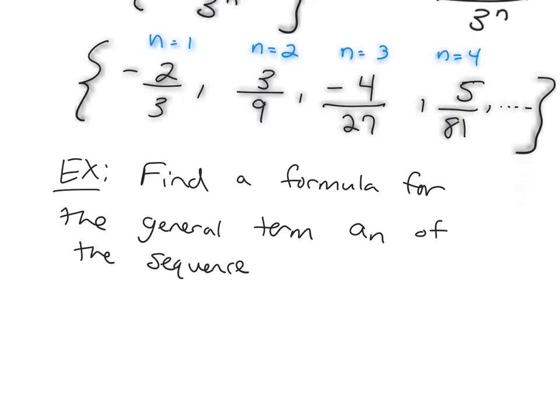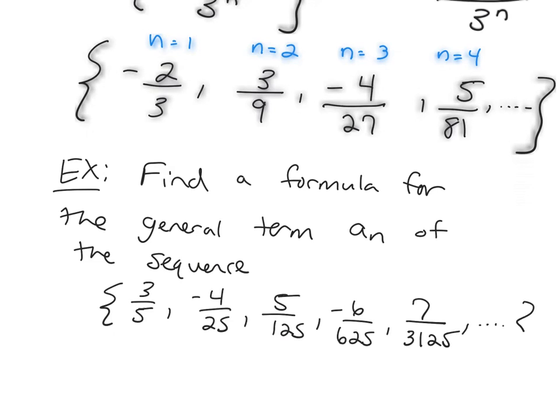Okay, so it's going to be 3/5, -4/25, 5/125, -6/625, 7/3125, and so forth.